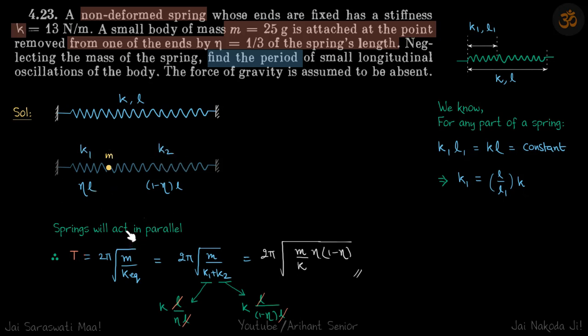Now both the springs will act in parallel, so time period will be 2 pi root m upon k equivalent. K equivalent of both the springs will be k1 plus k2 because they are in parallel.